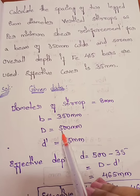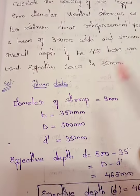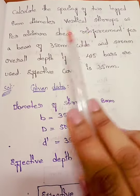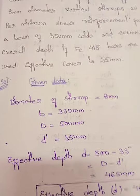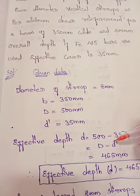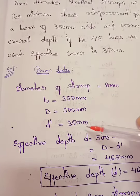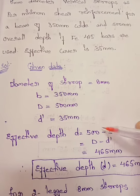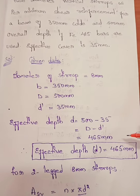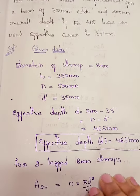First we'll write the given data: diameter of stirrups = 8 mm, b = 350 mm, overall depth D = 500 mm, and effective cover d' = 35 mm. The effective depth is not directly given, so we find it: effective depth d = D minus d' = 500 minus 35 = 465 mm.